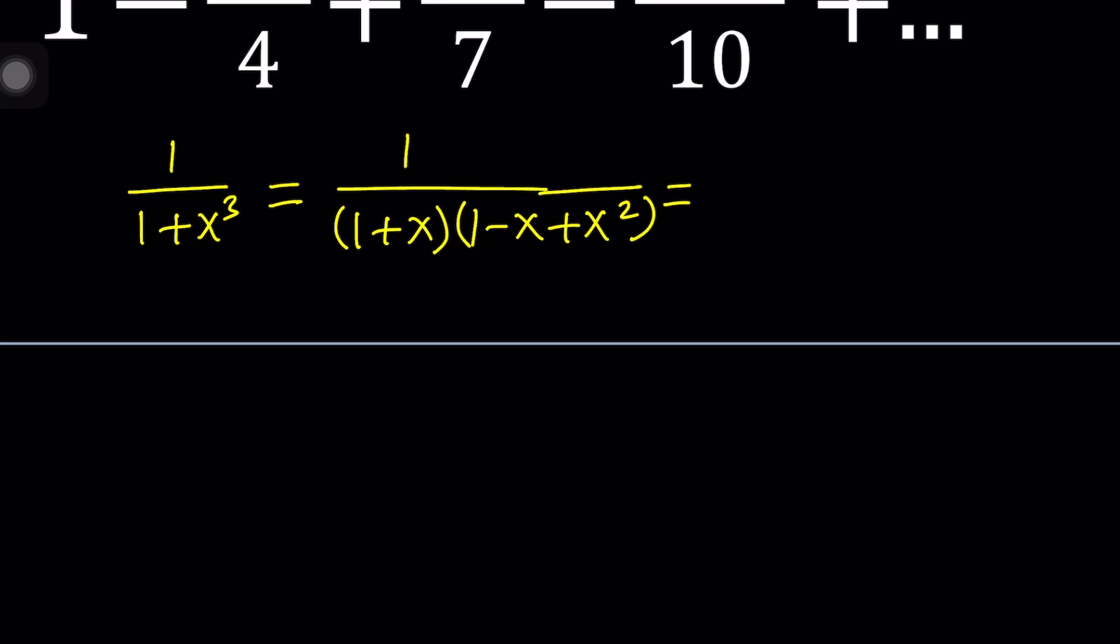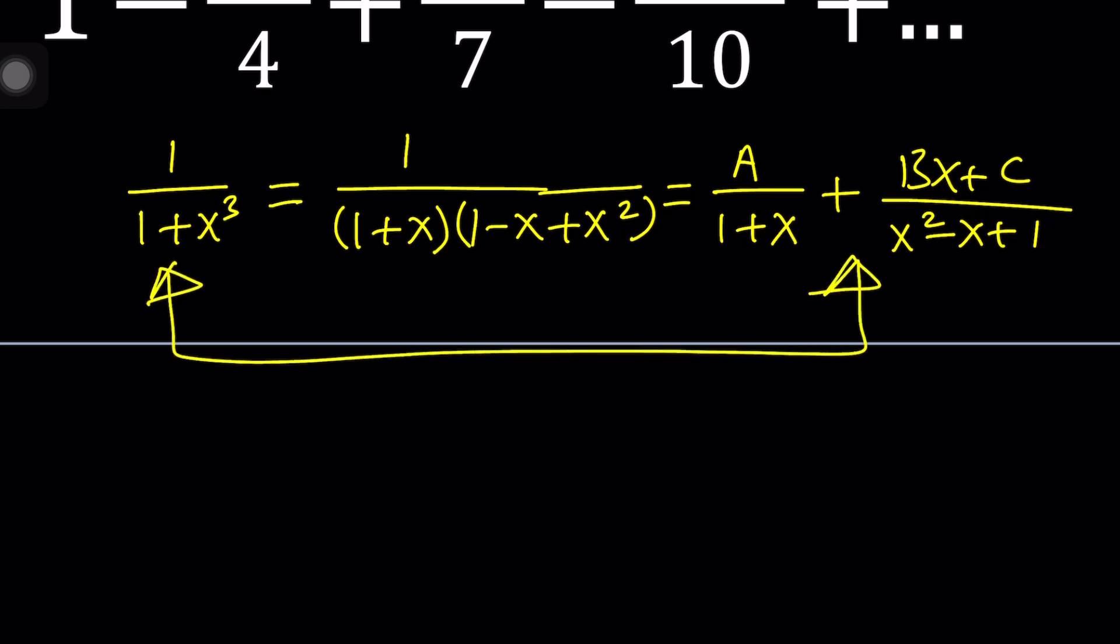This calls for the following. We should be able to write this as A over 1 plus x. And the reason why we use an A is because the degree of the denominator is 1, it's linear, so the numerator must be 1 less, which is a constant. And for the denominator, we need to use something linear because the denominator is quadratic. And allow me to write it as x squared minus x plus 1. And then we'll make a common denominator and just set the numerators equal to each other. By comparing these two things, we're going to get the following: 1 equals A times x squared minus x plus 1 after making a common denominator, plus Bx plus C multiplied by 1 plus x.